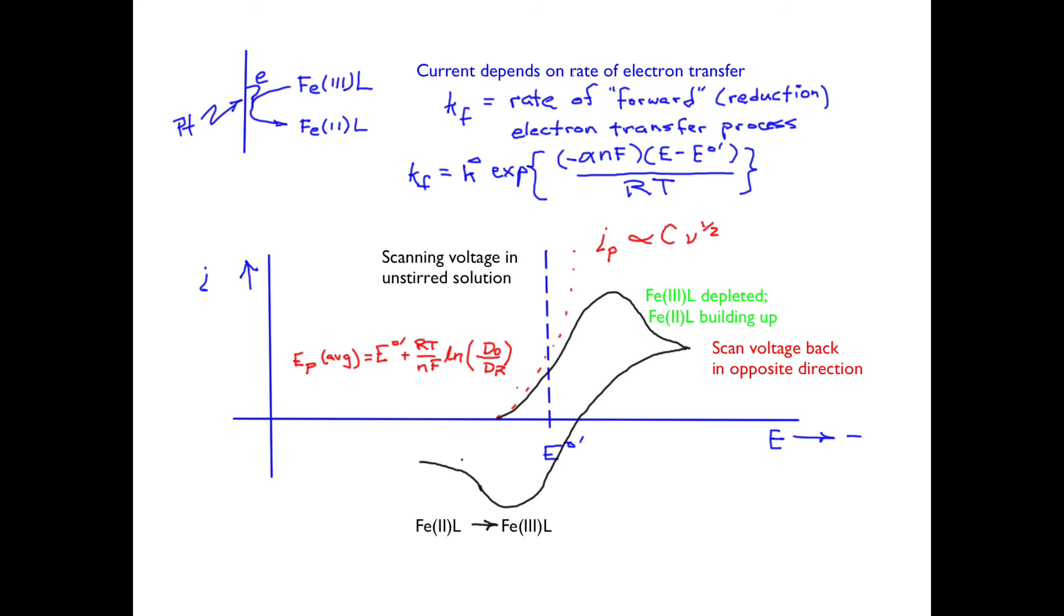In fact, the average of the peak potentials is a fairly good estimate of the formal potential for the redox couple. I say estimate because it actually depends upon the diffusion coefficients for the oxidized and reduced forms, but these are usually very close to each other, so the ratio approaches 1 and the log term approaches 0. Cyclic voltammetry then is the method of choice for estimating standard or formal potentials. One other advantage is the fact that you only need one form, either the oxidized or reduced species, not both, to do the experiment.